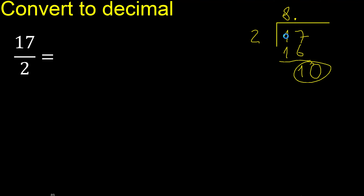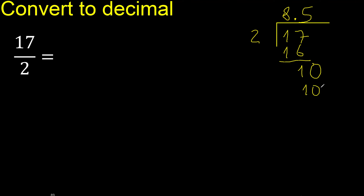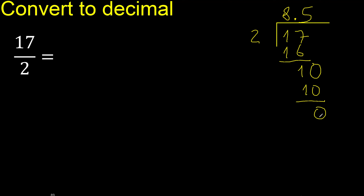10. 2 multiplied by 5 is exact — 10, which is not greater. Subtract 0. Therefore finish — the answer is 8.50.